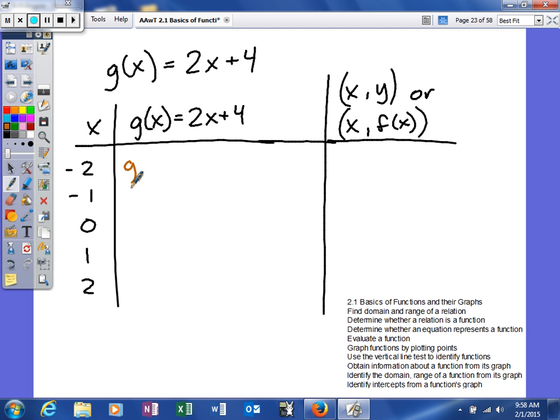To find this, we're going to find g of negative 2. So 2 times negative 2 plus 4. When you do that, you'll get negative 4 plus 4, so you'll get 0. To write our ordered pair, we'll say negative 2 comma 0.